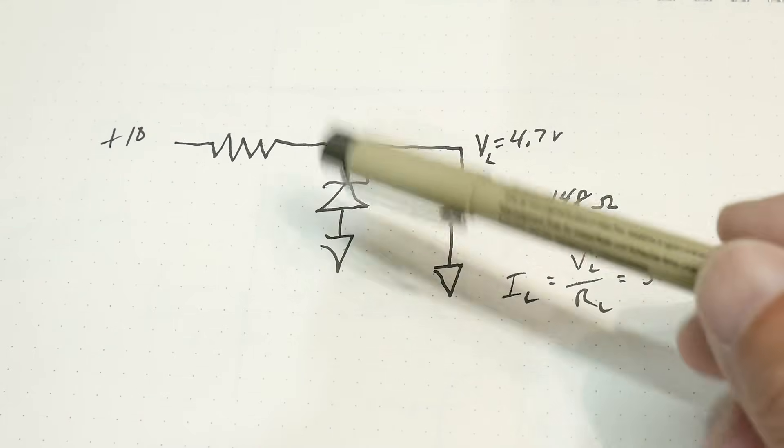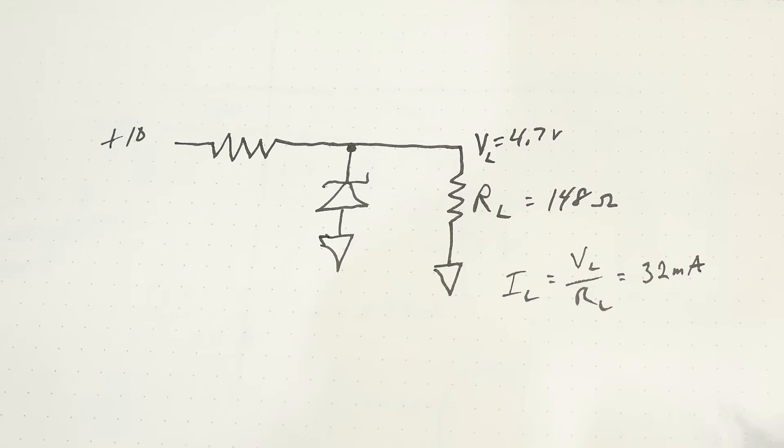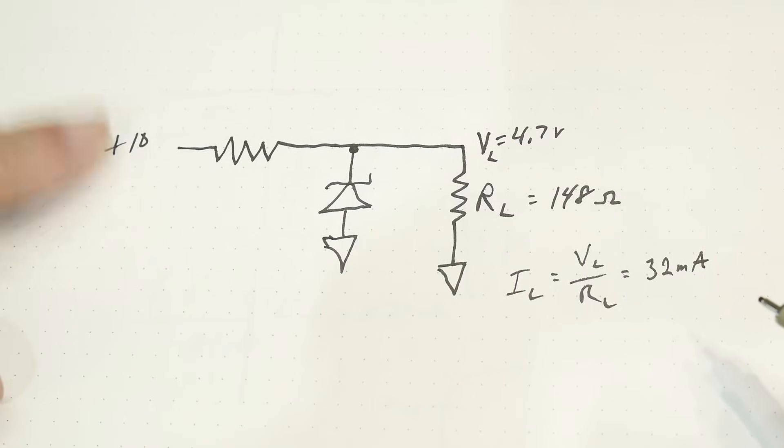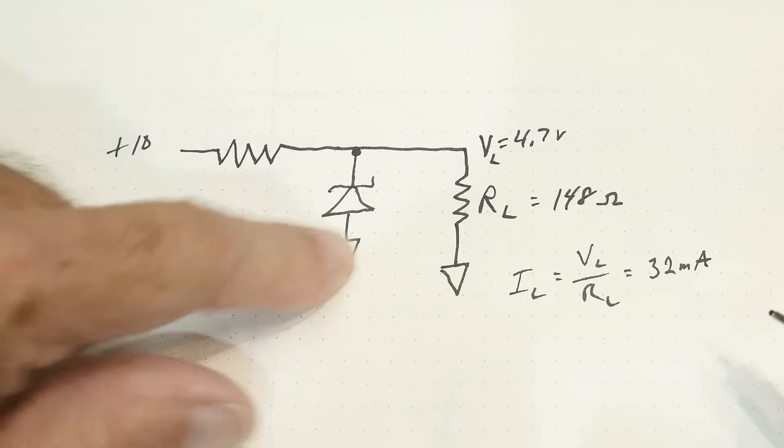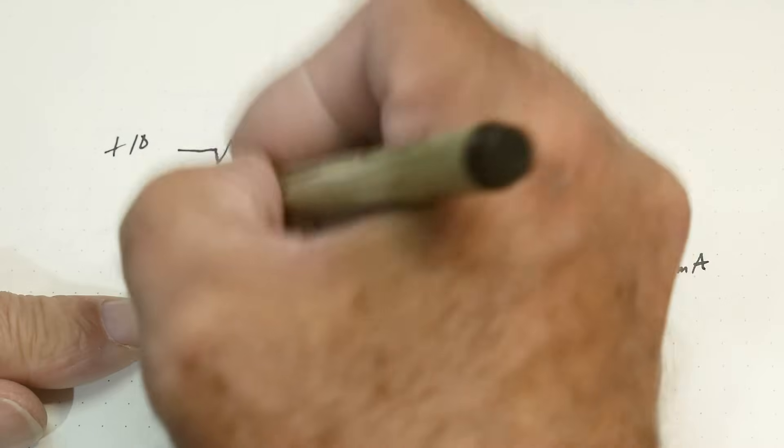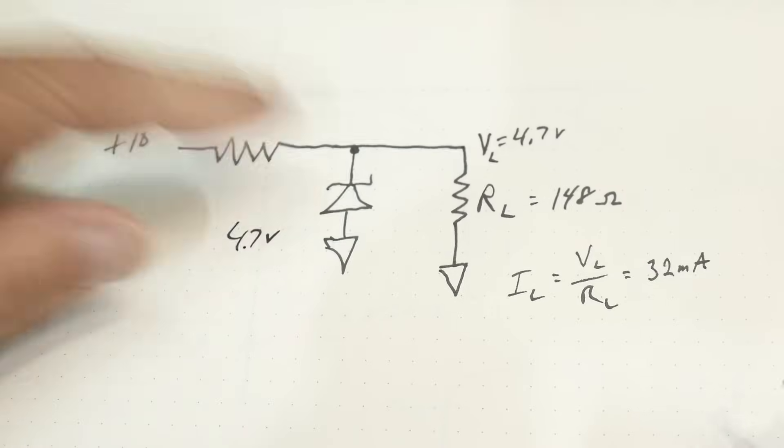All right, today we're going to be taking a look at using a zener diode as a voltage regulator. And so this is what you will see. You'll have some voltage out here. We're going to start with 10 volts and we're going to regulate that down to 4.7. So we have a 4.7 volt zener that we've chosen.